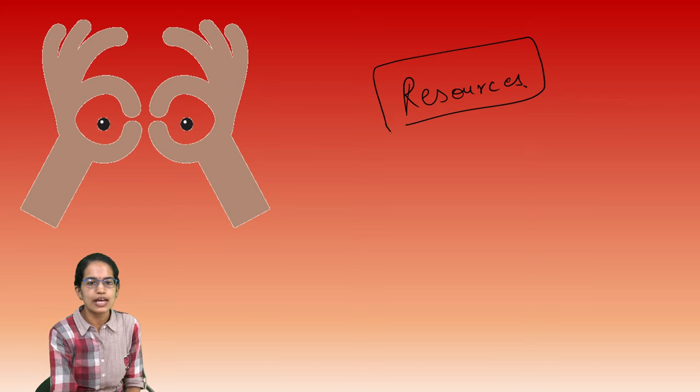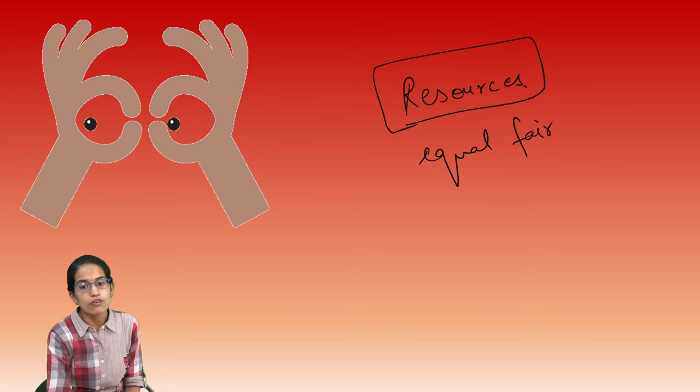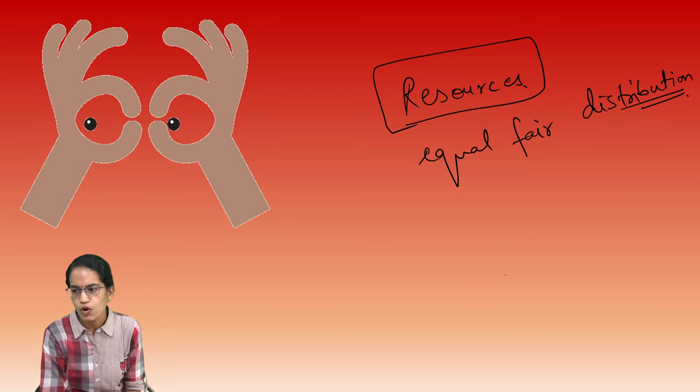Now, how do we understand this phenomenon? This equity is a very important aspect. We all know there are resources. When there are resources, we say that there has to be equal distribution of resource. If equal or fair distribution of resource is there, then this equity moves forward.